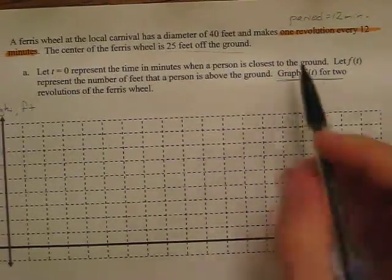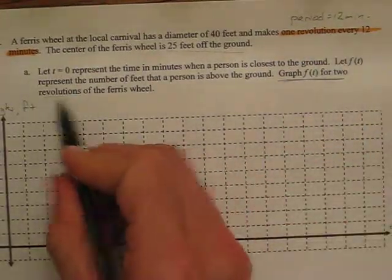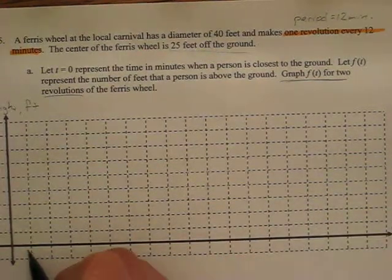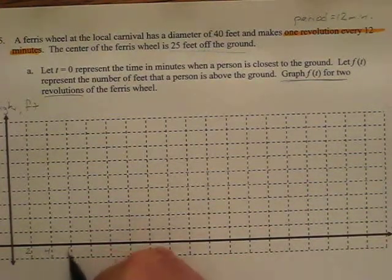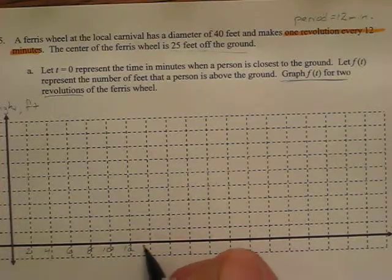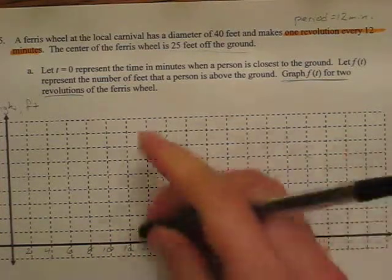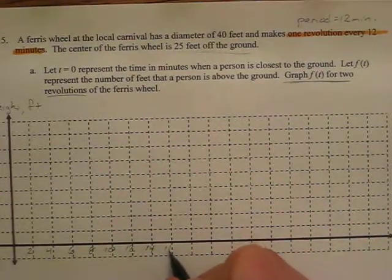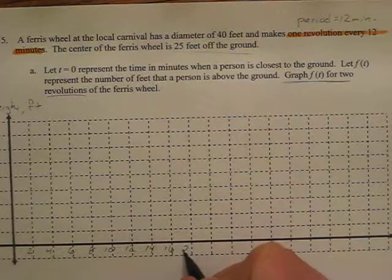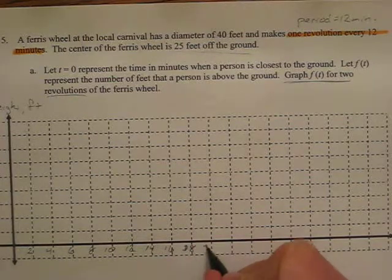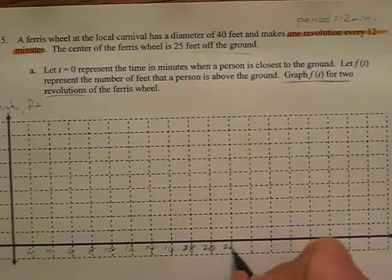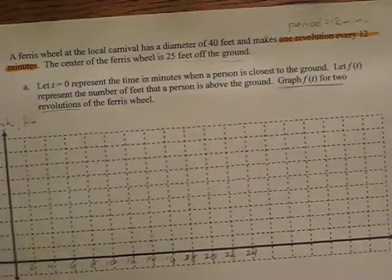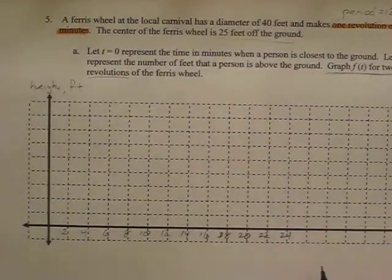And since it's 12 minutes for one period, and we want to graph two revolutions, we're going to have to get up to 24. So, I'm just going to say that this is 2, 4, 6, 8, 10, 12, 14, 16, 18, 20, 22, and 24. We probably could have gone by 3's, and that might have been a little bit better, but this will be okay.